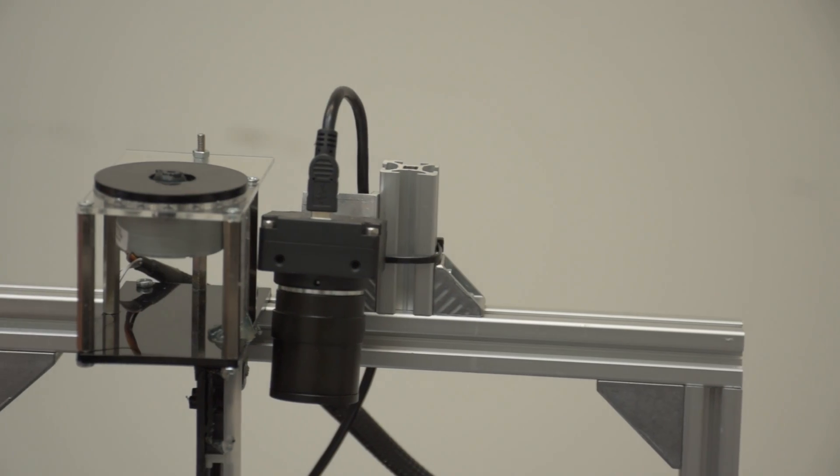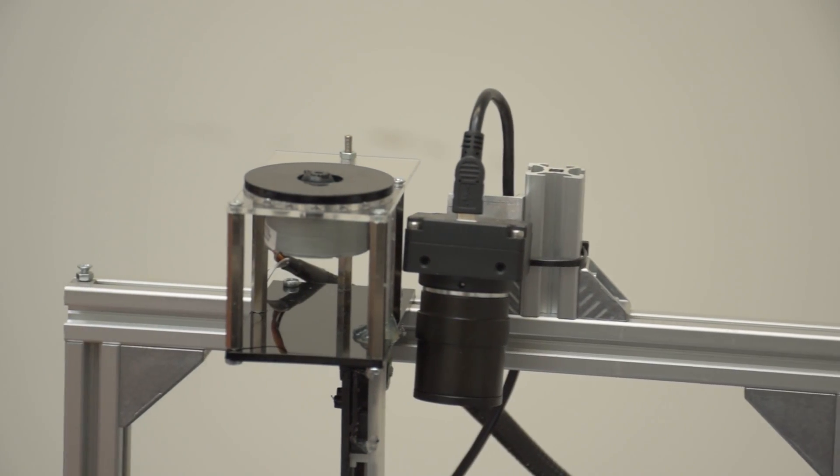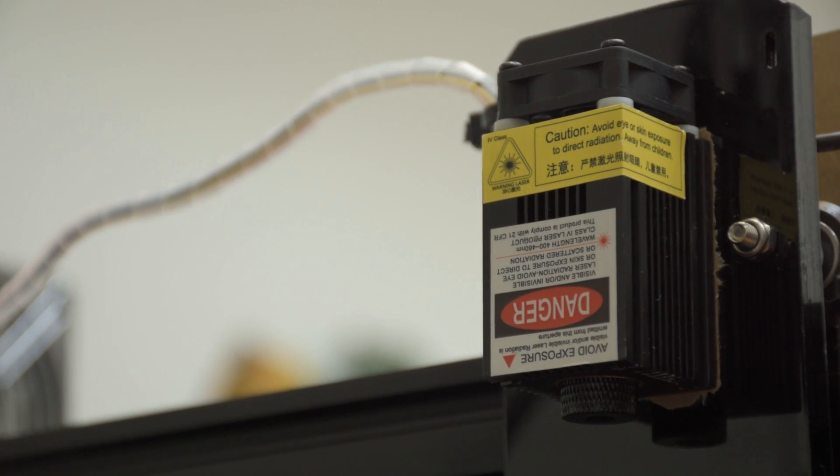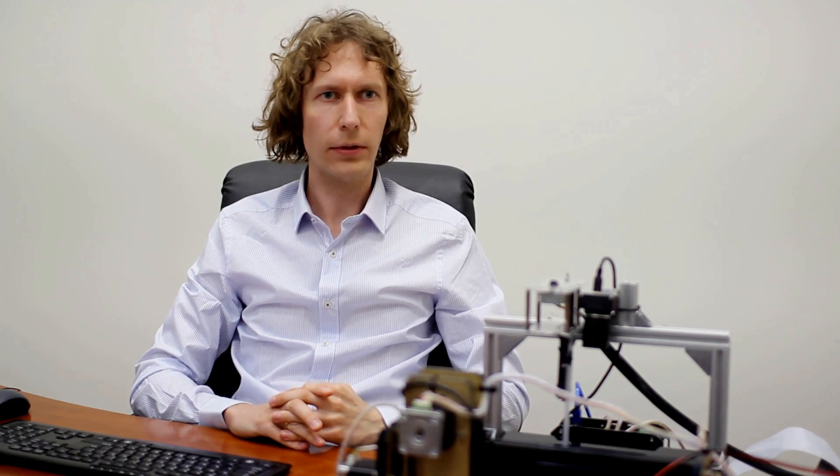We have also a camera here, which detects the position of the component and where it should be. And finally we have a laser here, which is used to solder the elements onto the PCB board in a non-contact way.